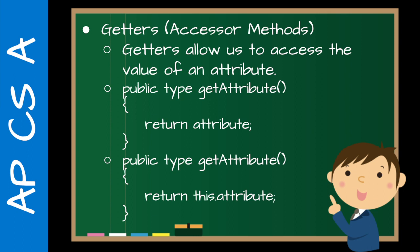Now if we actually want to access values — get those values out and do something with them — we use a getter, and they allow us to access the value of an attribute. So it's public type getAttribute(), return attribute, or public type getAttribute(), return this.attribute. For example: public String getName(), return name, or public String getName(), return this.name. I'm really, really picky about naming and I just make sure the students do everything exactly consistently over and over again so there's no ambiguity.